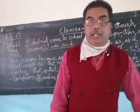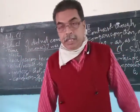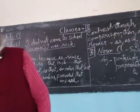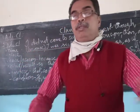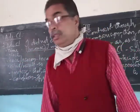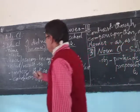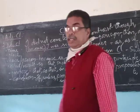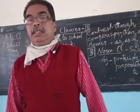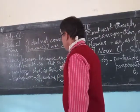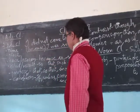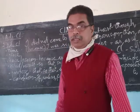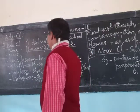Examples of adverb clause of reason: 'As I was tired, I went to bed early.' 'Since it is early morning, I don't want to go out of my house.' Next is adverb clause of effect or result, using the conjunctions 'so...that' or 'such...that.' Note that 'so...that' with dots and 'so that' without dots are two different things.